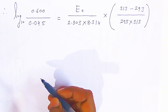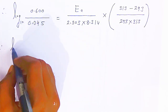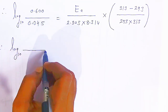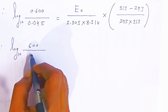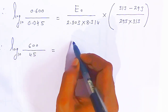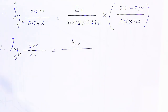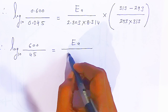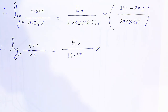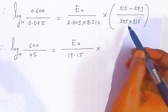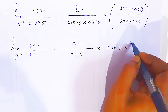If you multiply numerator and denominator by 100, the decimals are removed. So log base 10 of 600 divided by 45 is obtained. When you divide 600 by 45 you get 13.33. The denominator simplifies to 19.15 multiplied by 2.18 into 10 to the power minus 4.